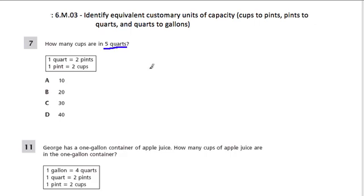So let's look at this first one. It says: how many cups are in five quarts? One quart equals two pints, so I'm going to make that as a ratio. For every one quart, I have two pints.